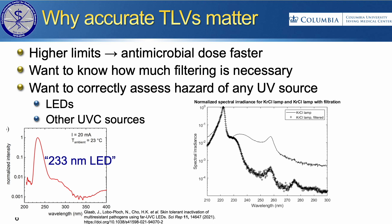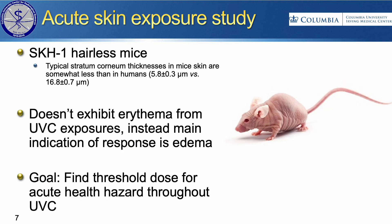Not all sources are going to be a perfect line source. We know that a krypton chloride lamp has emissions up to about 260 nanometers. LEDs being developed in the far UVC range also have tails that extend up to 230, 240, 250 nanometers. We need to know how much filtering is really necessary for those sources. Ideally, the TLV would be used to evaluate any lamp accurately — you would multiply the hazard factor at each wavelength by the total spectrum output and figure out the total health hazard.